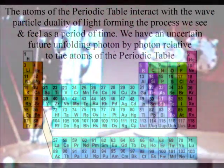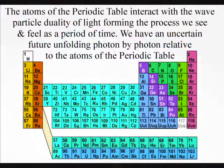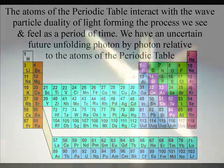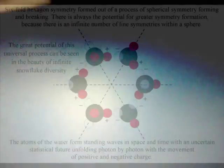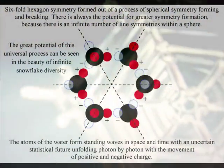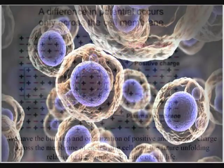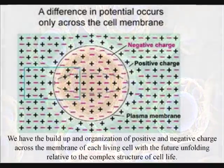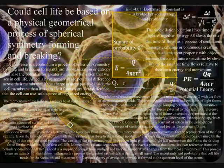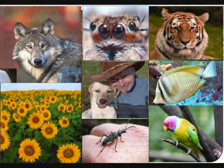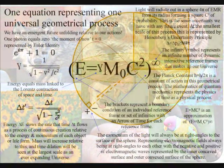Relative to the atoms of the periodic table, we have the spontaneous absorption and emission of photon energy as an emergent process, with everything from plant growth to snowflake diversity being part of this universal process. Even cell life is part of this process, with the build-up and organization of charge relative to the membrane of each living cell. When we look at the complexity and diversity that this simple process can achieve, it can seem logical that in the form of a tapered cavity it would be able to form thrust.